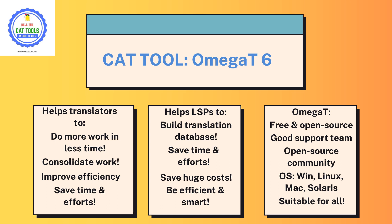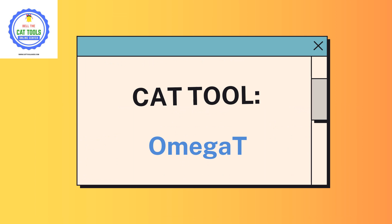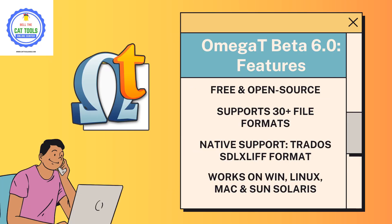OmegaT works on Windows, Linux, Mac, and Sun Solaris operating systems, making it a wonderful option for everyone. The latest version of OmegaT is OmegaT Beta 6.0. As mentioned, it is free and open source, and it supports 30+ file formats, ranging from Word, Excel, and PowerPoint to SRT, InDesign, FrameMaker, and many other file formats.